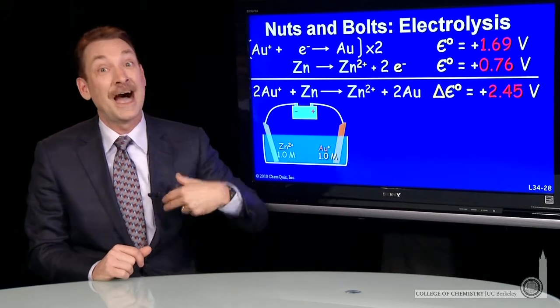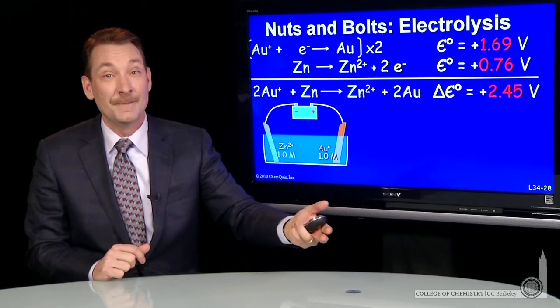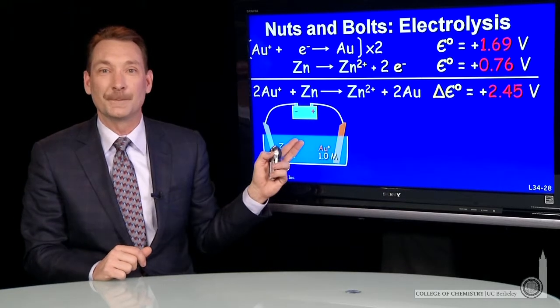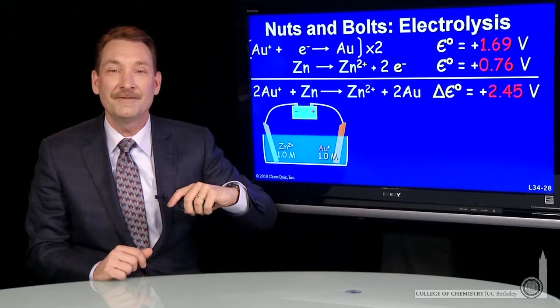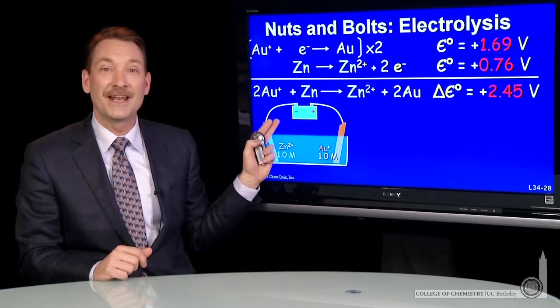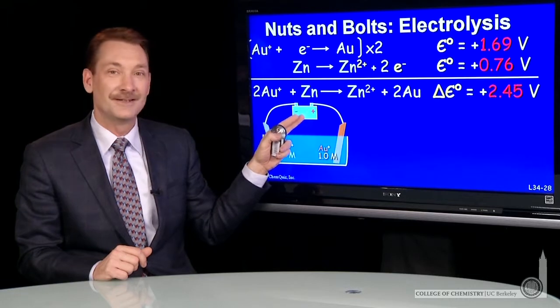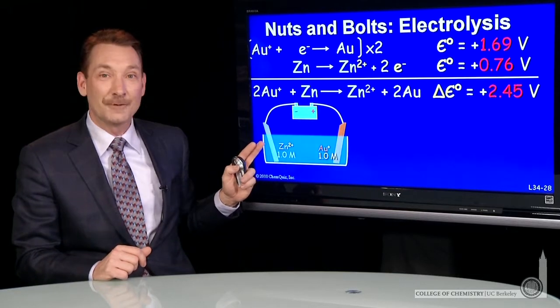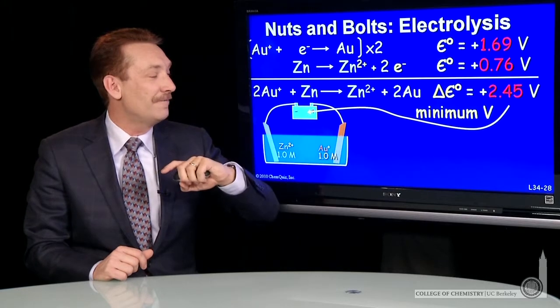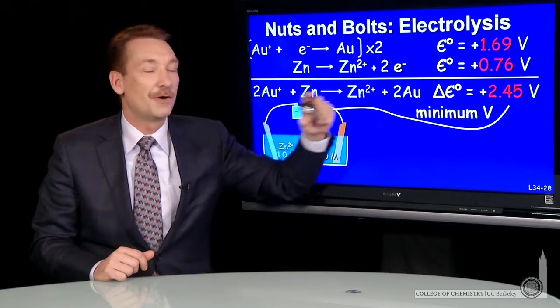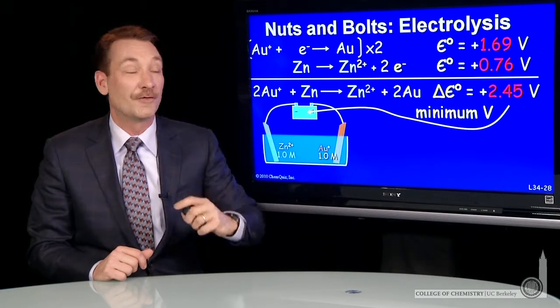How much greater than, what kind of overvoltage I need, depends on the configuration of the system. But theoretically, just over 2.45 should make this galvanic cell go in reverse and plate out the zinc metal. Minimum voltage of 2.54 volts is the minimum overvoltage we need.